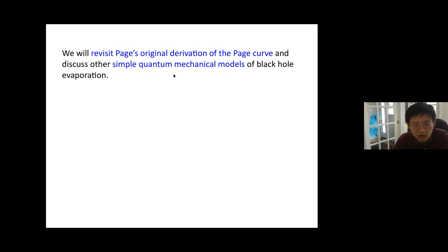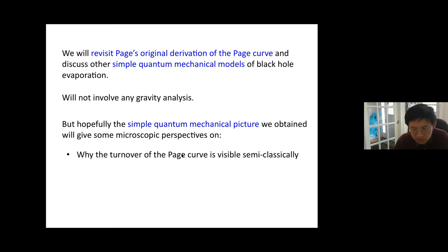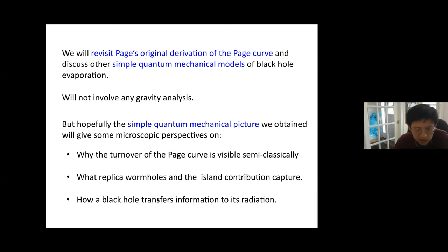I will revisit Page's original derivation of the Page curve and discuss some simple quantum mechanical models of black hole evaporation. This will not involve any gravity analysis — just purely quantum mechanical considerations. Hopefully the simple quantum mechanical picture we obtain can give some microscopic perspective on why the turnover of the Page curve is visible semi-classically, what replica wormholes and the island contribution capture, and how a black hole transfers information to its radiation.